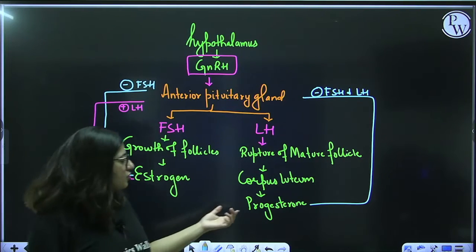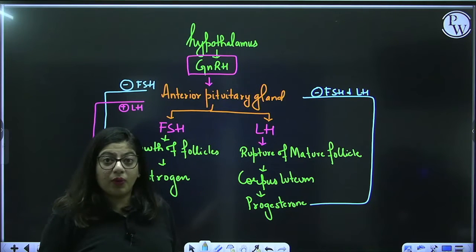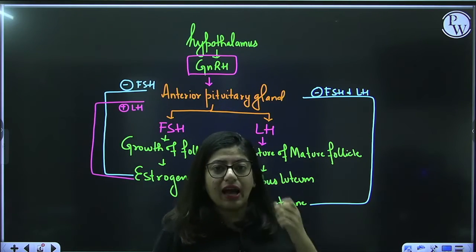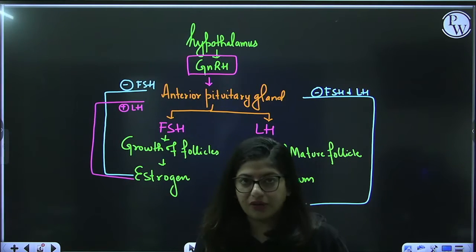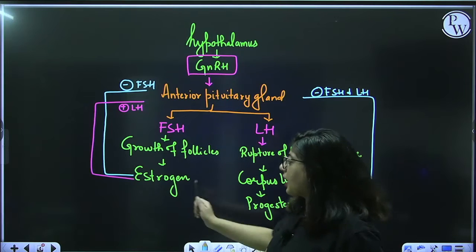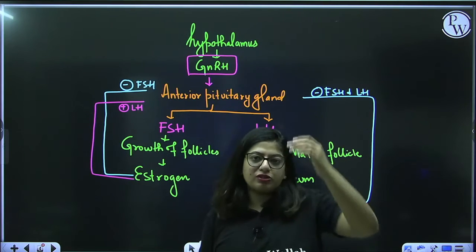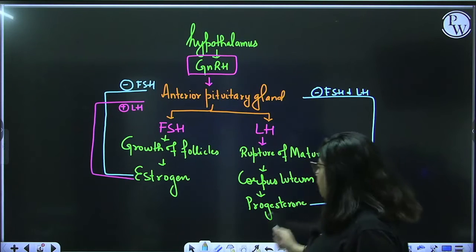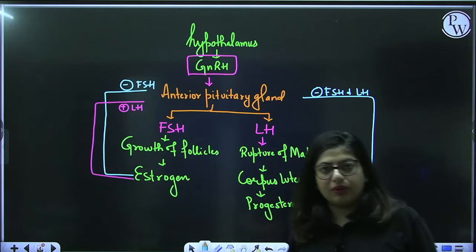LH causes rupture of the mature follicle. The ovum or oocyte is released into the fallopian tube. Whatever remains becomes corpus luteum. Corpus luteum is a rich source of progesterone. Progesterone gives negative feedback to the anterior pituitary for both FSH and LH. So if progesterone is high, both FSH and LH will drop. If estrogen is high, FSH drops but LH rises.